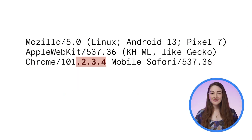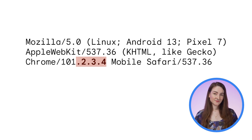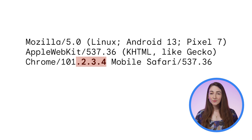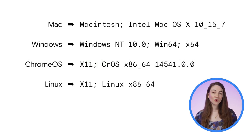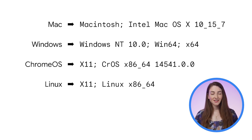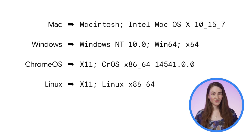We have already started removing some of that information and replacing it with fixed values. From Chrome 101, we replaced the minor version number with zeros. From Chrome 107, we replaced the desktop operating system version and CPU information with a fixed value for each platform.